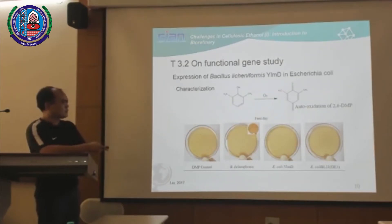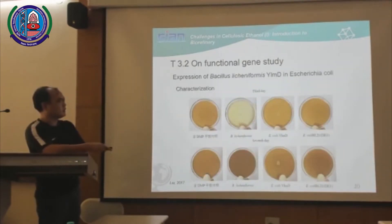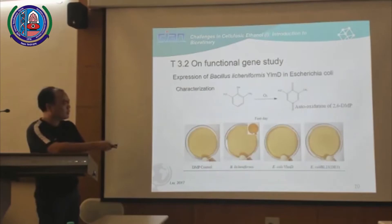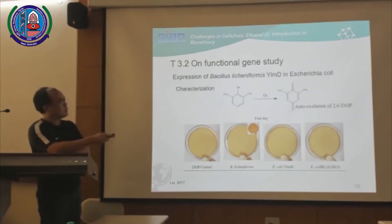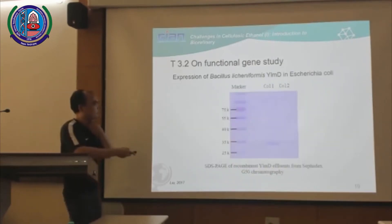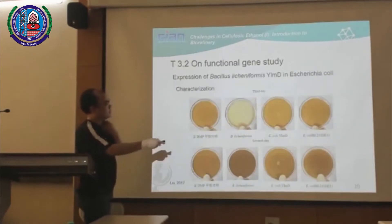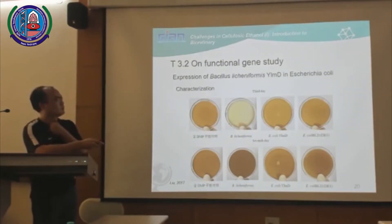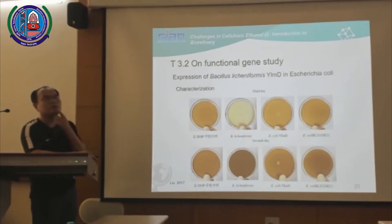So this is the first day, this is the third day, the seventh day — it gradually turns dark, the color turns dark. But if we inoculate the recombinant strain with YRUD, we found that the color turned white on the third day. But on the seventh day, it turned more dark. So we tried to explain it.